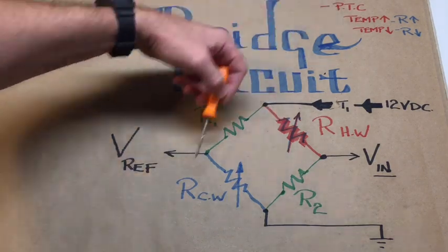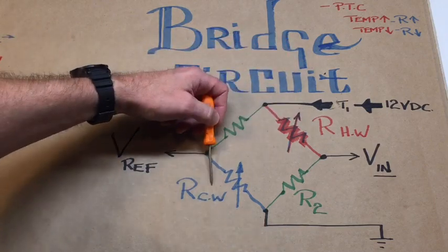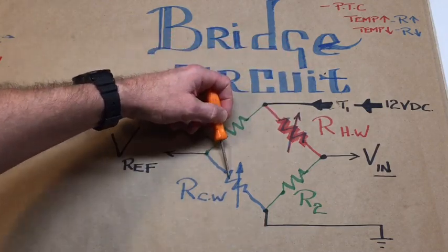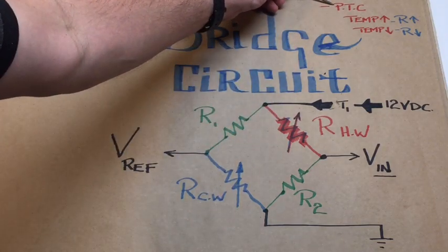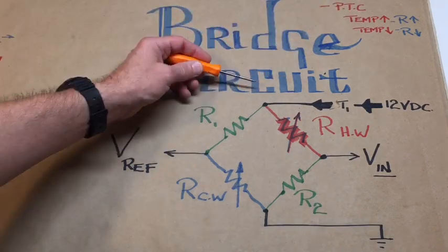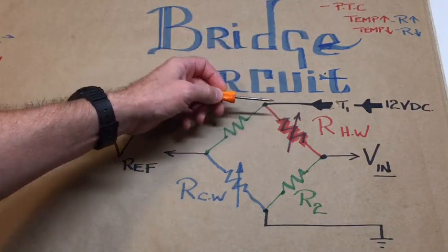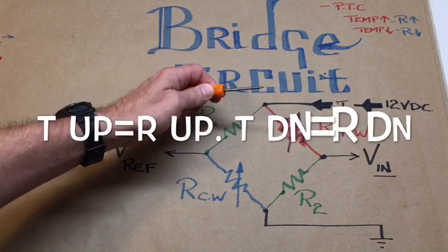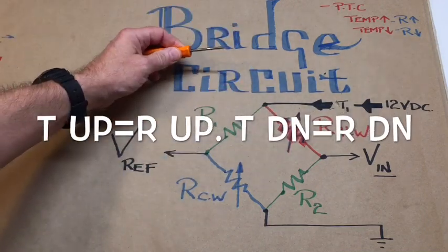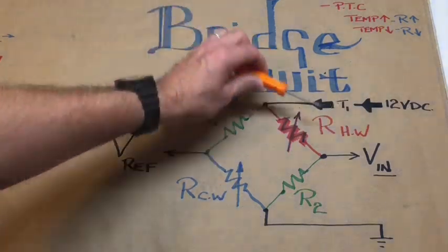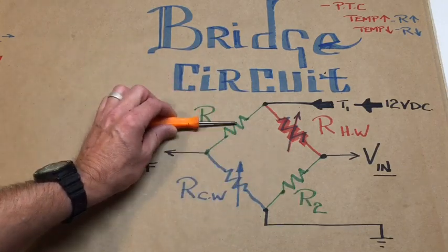The thermistors are, in both cases, both the hot wire and the cold wire or the reference thermistor are actually positive temperature coefficient thermistors. That is to say, as the temperature increases, the R value or the resistance actually increases.